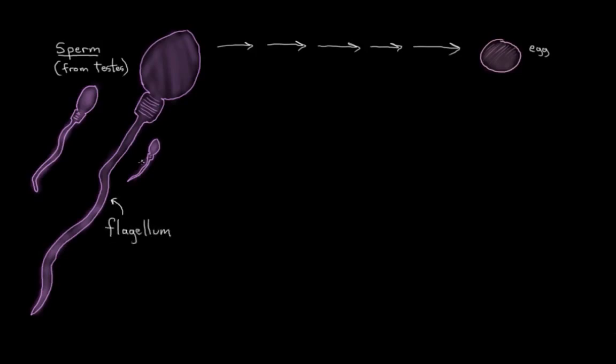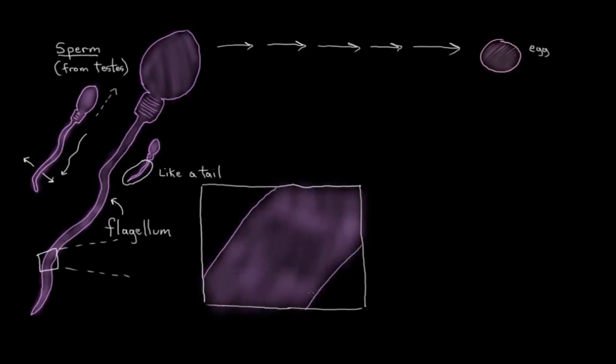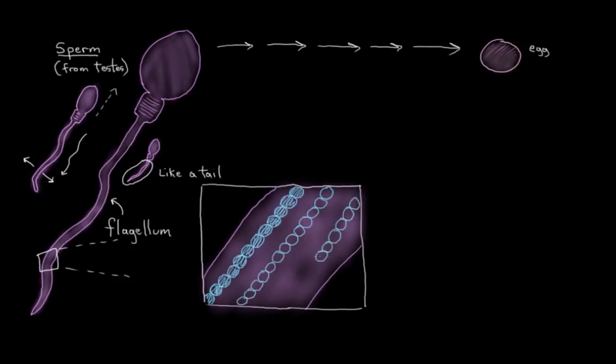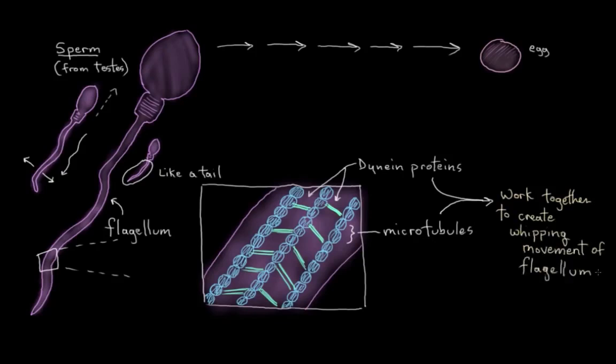So this is essentially a tail, right? A tail that whips around to propel the sperm along. And in humans, this flagellum is made of, if we zoom in on it a bit, it's made of these little monomers of microtubule proteins that get put together, sort of like Lego. And they work together along with these little connections between them called dynein proteins to whip this flagellum back and forth and cause the sperm to move.